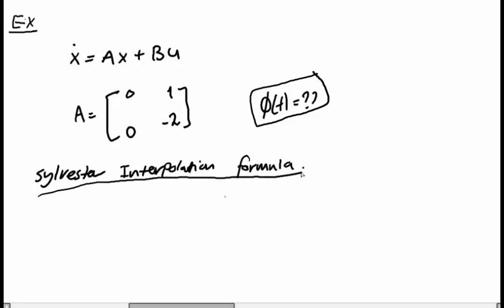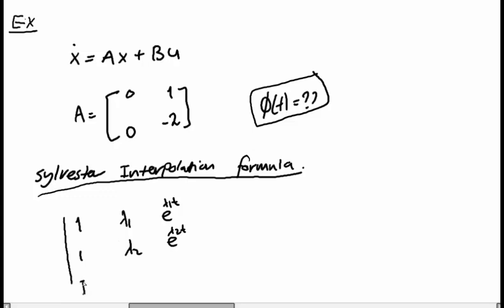Okay, how do we find the state transition matrix using this method? The method is as follows: we have a determinant with entries: 1, λ₁, e^(λ₁t); 1, λ₂, e^(λ₂t); and then the identity matrix I, the A matrix, and e^(At) — which is equal to zero. We need to solve this determinant.